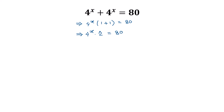Now divide both sides by 2. We can write 4 to the power x times 2 divided by 2 is equal to 80 divided by 2. The 2s cancel out, so 4 to the power x is equal to 40.